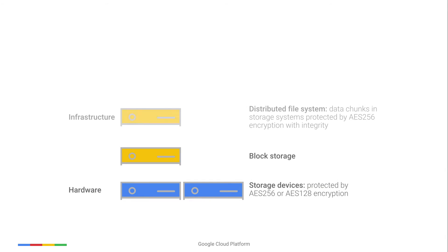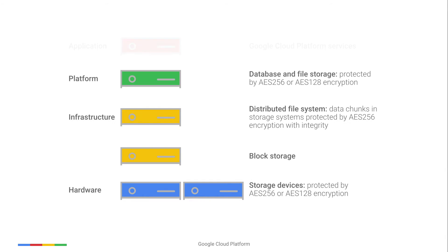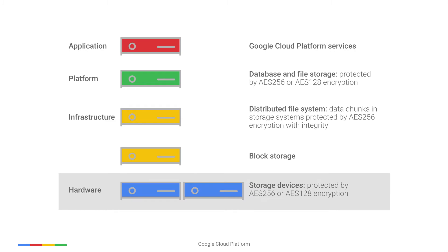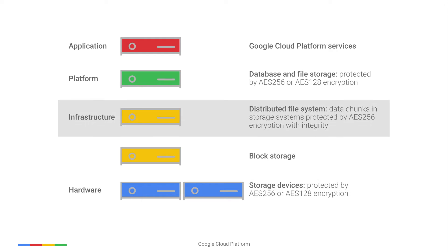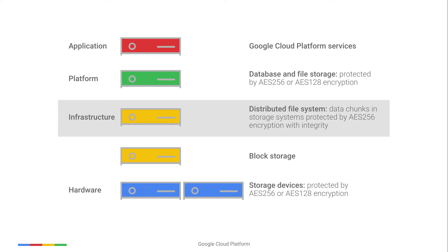Google uses several layers of encryption to protect data. First, at the hardware device layer, we encrypt hard disks and solid state drives with a device level key. Then we encrypt data at the storage system layer. Let's dive a bit deeper into that.